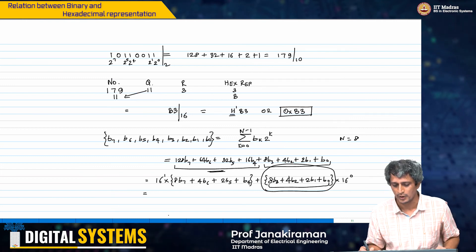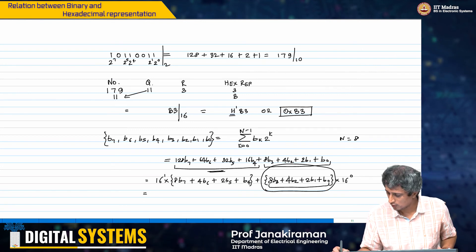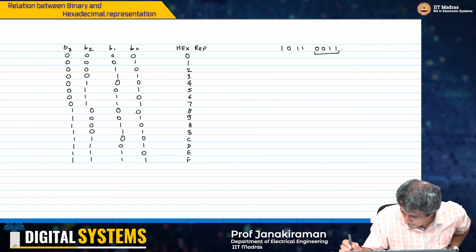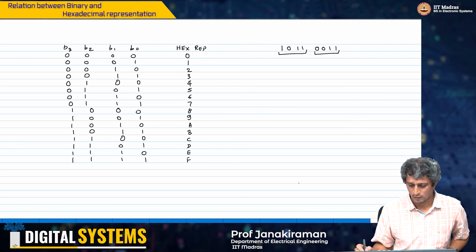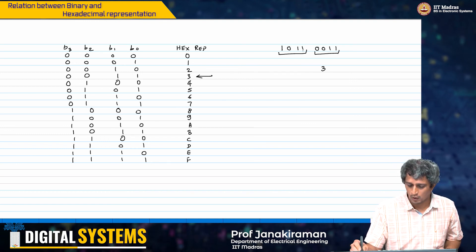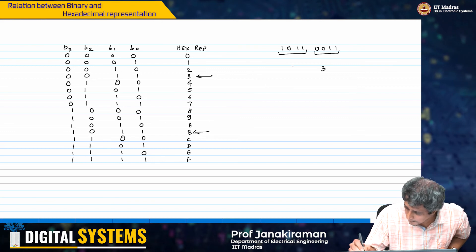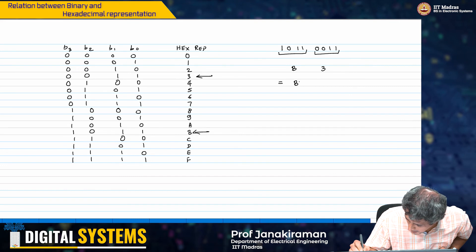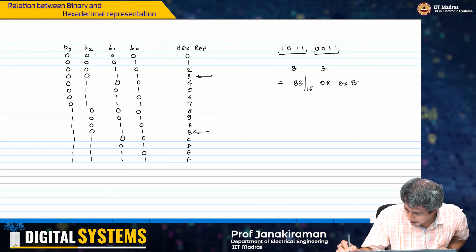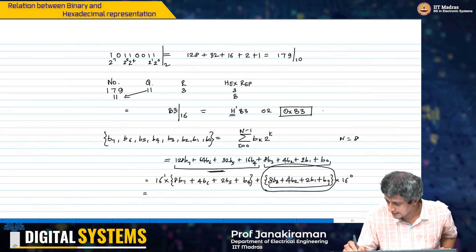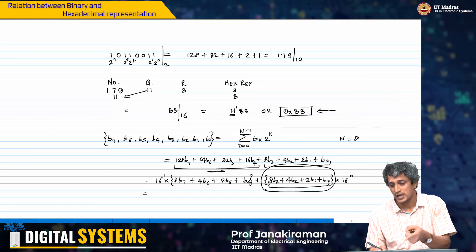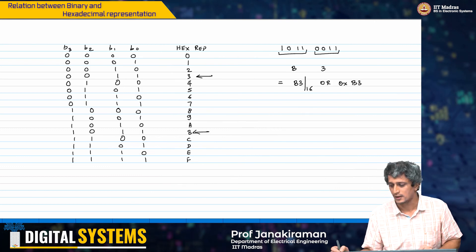Let us look at this particular example to get a feel for it: 1, 0, 1, 1, 0, 0, 1, 1. I said group them in sets of 4. The first group 0, 0, 1, 1 gives us 3. Then I have 1, 0, 1, 1 - what is 1011? It is the number B. And therefore I can write this as B3 to base 16, or as 0xB3. You go back and see that is exactly what we got by converting this binary number back to its decimal form, then dividing by 16 iteratively and finding out the hexadecimal representation.